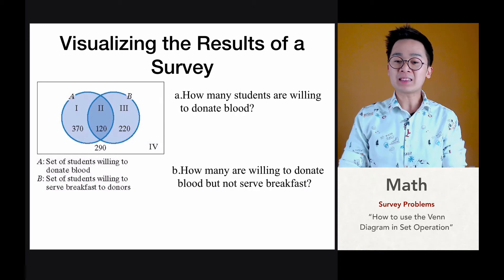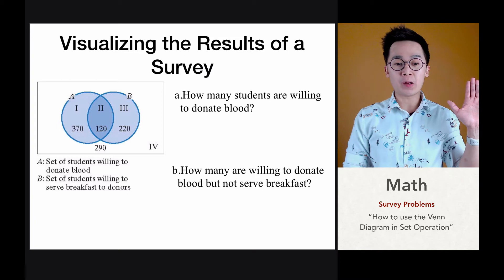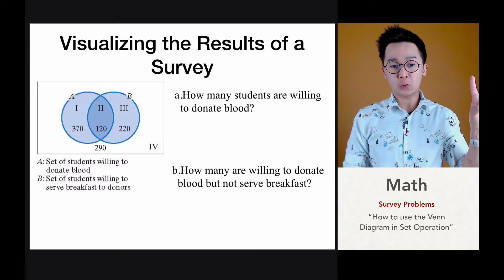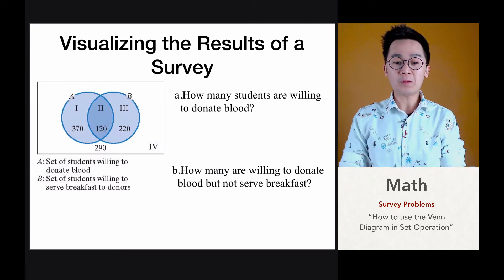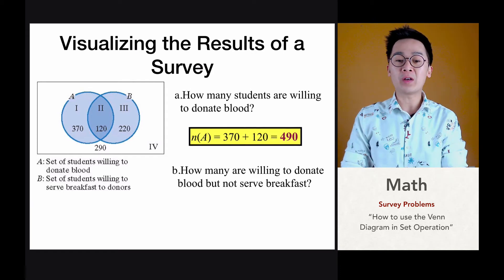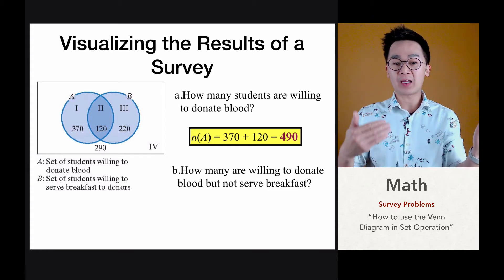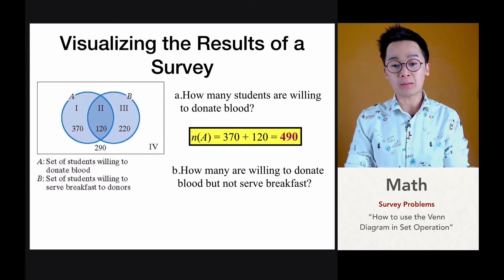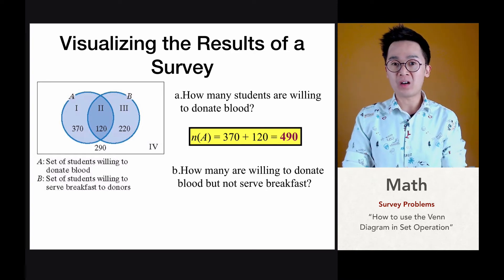Starting with the first problem, we're going to count how many students are willing to donate blood. Set A comprises two groups: students who are just willing to donate blood, and those willing to donate blood and serve breakfast. The cardinality of set A would be 370 plus 120, because even though group two is the intersection of A and B, it still falls under students willing to donate blood. So we have 370 plus 120, which totals 490 students.